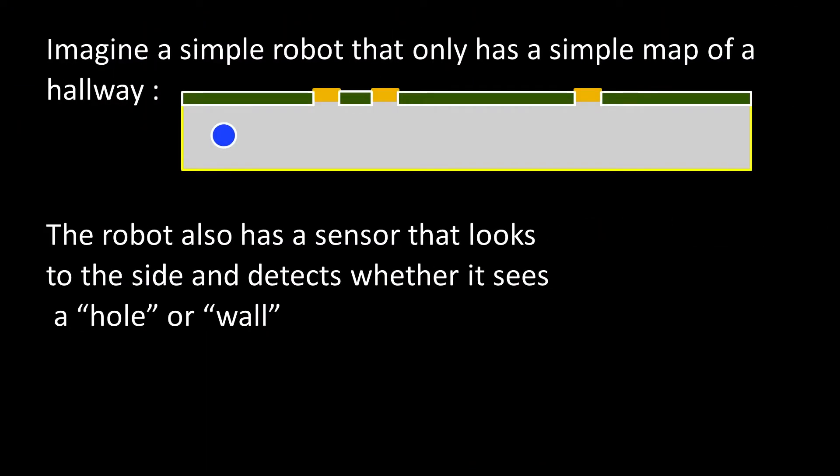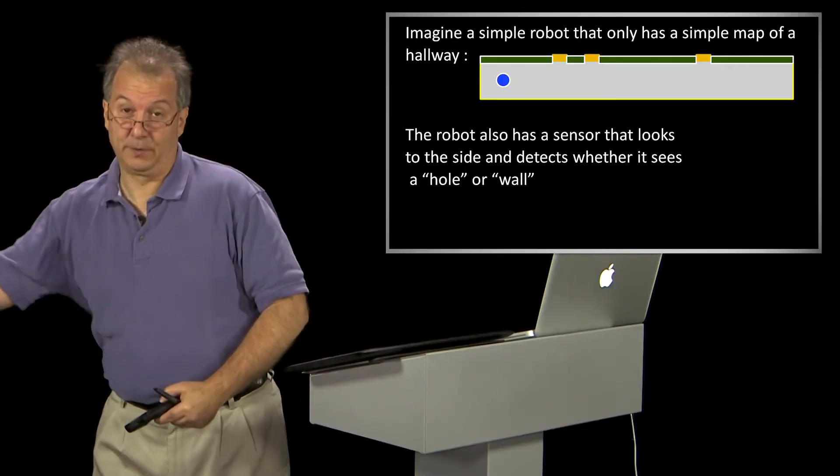The other thing that the robot has is it just has a detector, a sensor, really dumb, that just looks out to the side. You can even think of it as it's just got a stick and it pokes it. And it says, do I hit something or don't I?